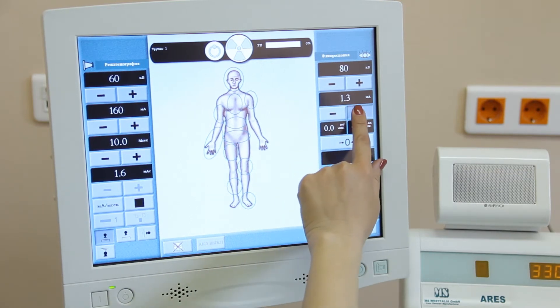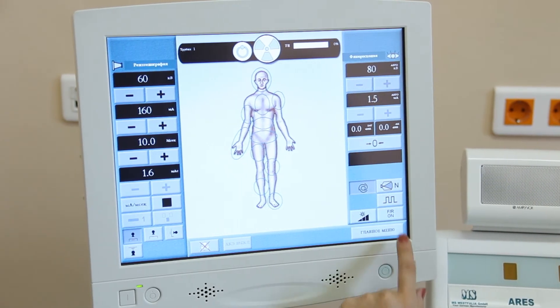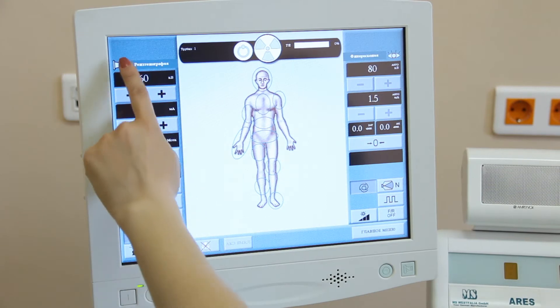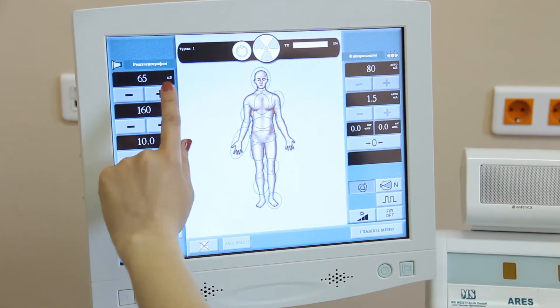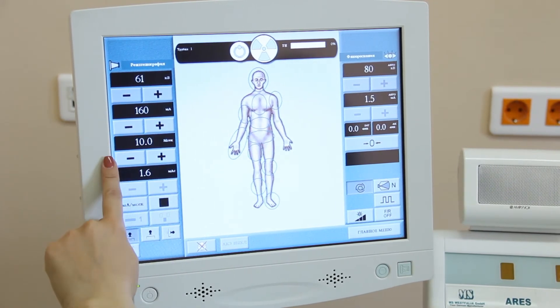The control buttons at the bottom allow setting a required mode for radioscopy. Parameters of radiography may also be adjusted manually. The control buttons at the bottom allow setting various modes for radiography.